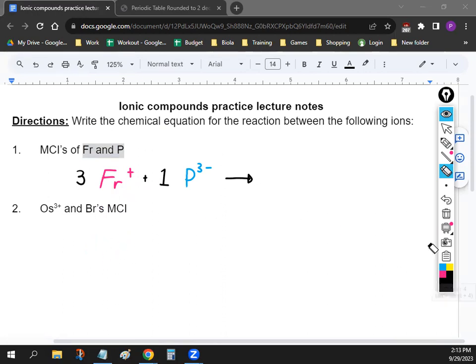Alright. So let's write down the chemical that we make. So we're going to make one chemical and the chemical that we make is going to be made out of three Frs. So we're going to write Fr three and we only need one phosphorus. So we're going to put a P right here. So there you go.